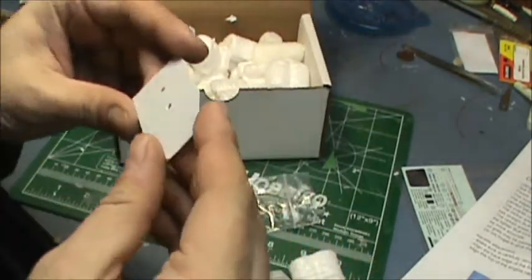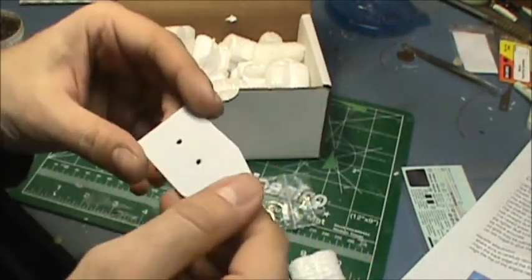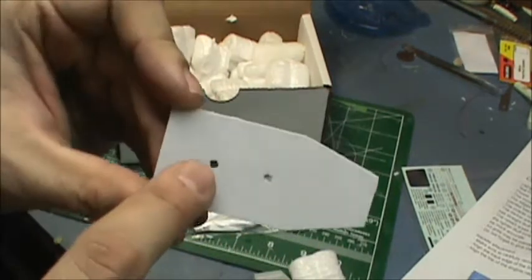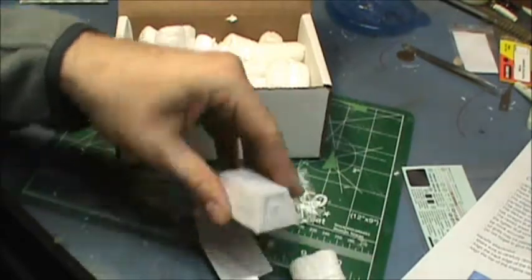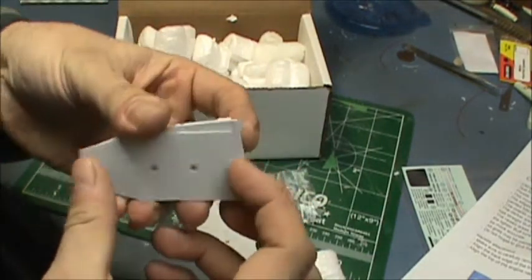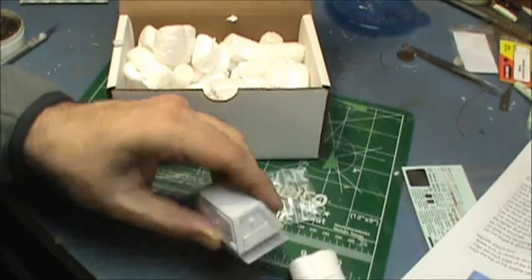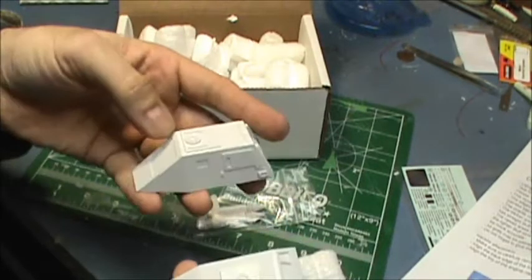Now, this shim is orientation specific. How do you know which side is up? Can't really see it here, but it actually says this side up. So, you get sandwiched between the hull halves like so. You could actually paint this model before assembly.